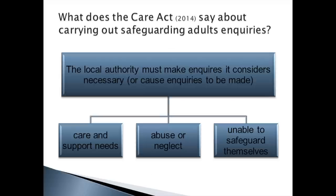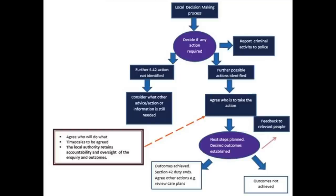What specifically does the Care Act say about carrying out safeguarding adults? The local authority must make enquiries that it considers necessary, or cause enquiries to be made. The enquiries might include care and support needs, investigating abuse or neglect, and looking specifically at people who are unable to safeguard themselves. The next slides look at decision-making processes and the use of section 42 of the Act, which we will explore in more detail using specific case studies.